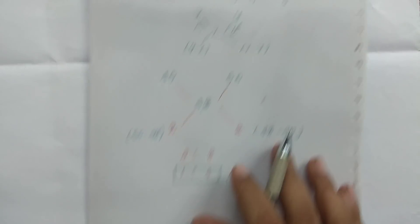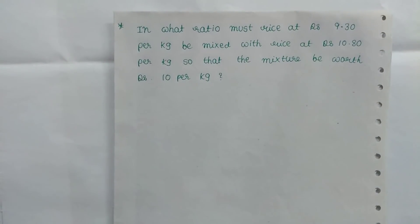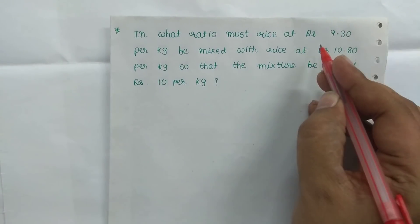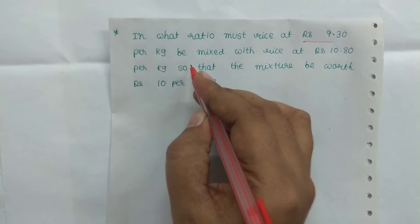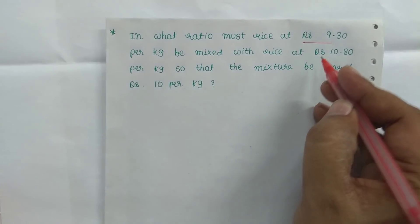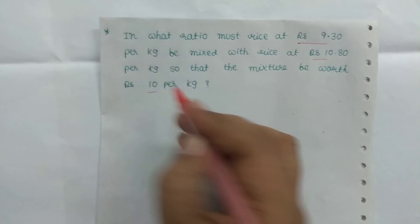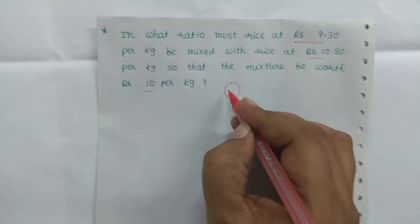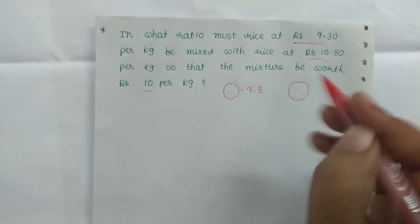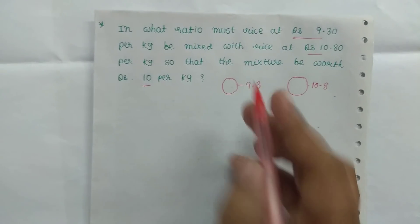Here we will make the mixture and allegation. The same sum: in what ratio must rice at Rs. 9.30 per kg be mixed with rice at Rs. 10.80 per kg so that the mixture is worth Rs. 10 per kg? We have two types of rice: one quality rice at Rs. 9.91 per kg and another at Rs. 10.80 per kg.